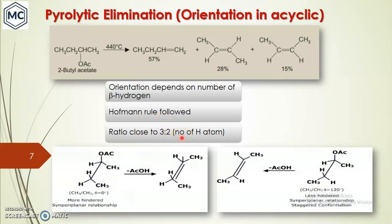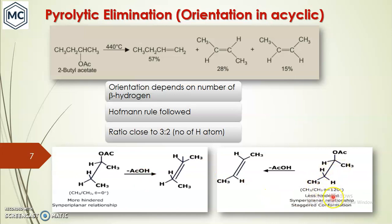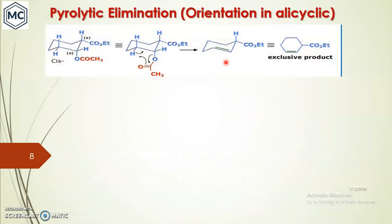Regarding the Z/E product ratio, in one case two methyl groups are far apart, and hydrogen and the O-acyl leaving group are syn — they get eliminated from the same side. In the other case, the two methyl groups have a dihedral angle of zero, so it is more hindered (eclipsed/periplanar relationship). But where the dihedral angle between the two methyl groups is 120°, the staggered conformation is more stable, and that is why more product is obtained from the staggered transition state.